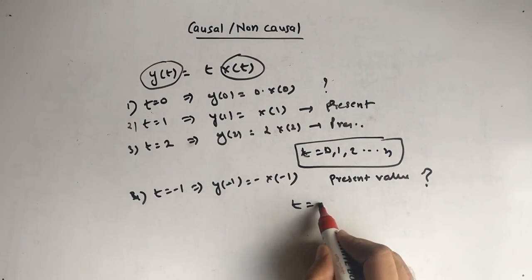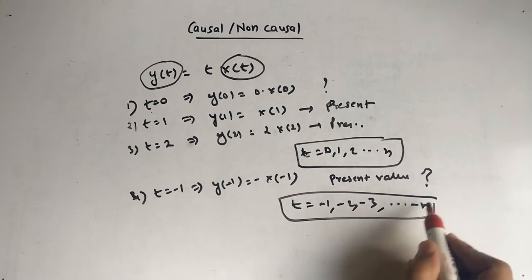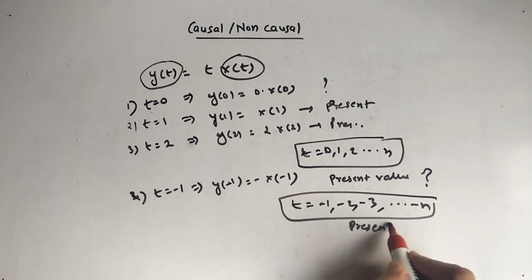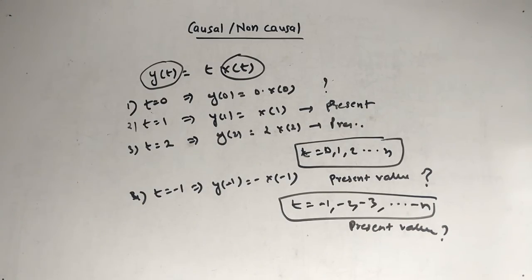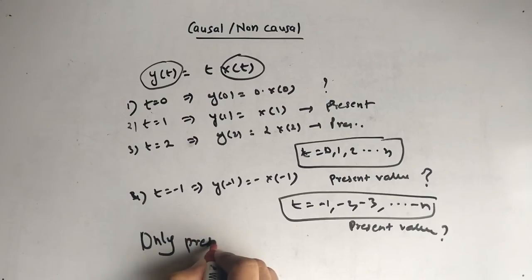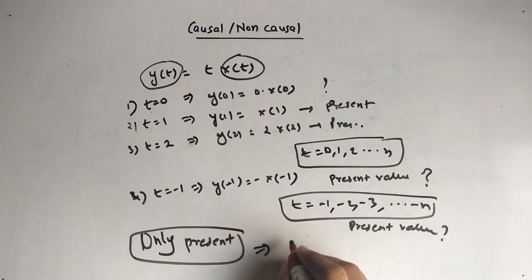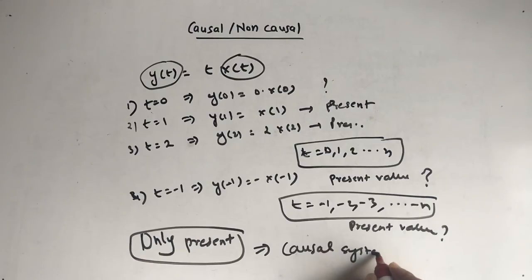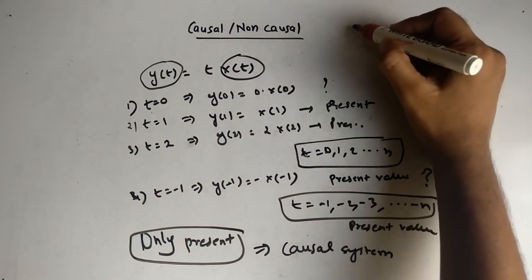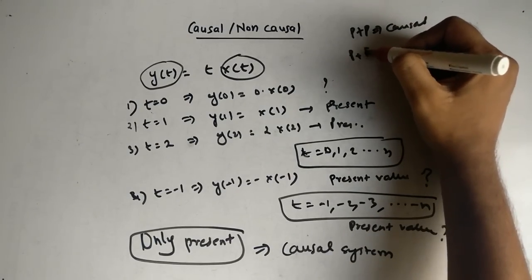At negative values as well — minus 3 and so on to minus n — we will still get the present value. So if there is only present value, only present, then the system is a causal system. So you know: present plus past is causal, and present plus future is non-causal.